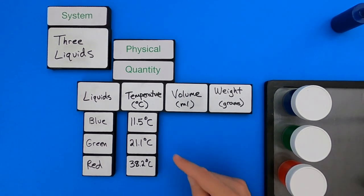So the first thing I noticed is that they have different temperatures, varying all the way from 11 degrees Celsius, to around room temperature, to warmer than temperature. Next thing I need to do is measure volume.